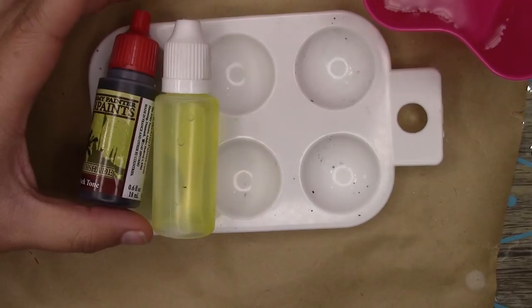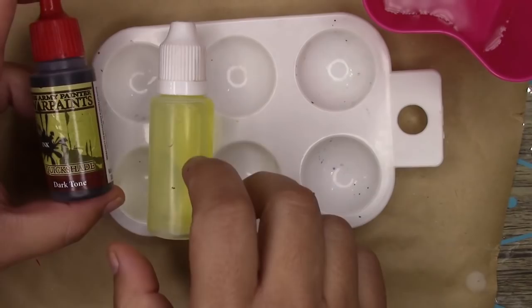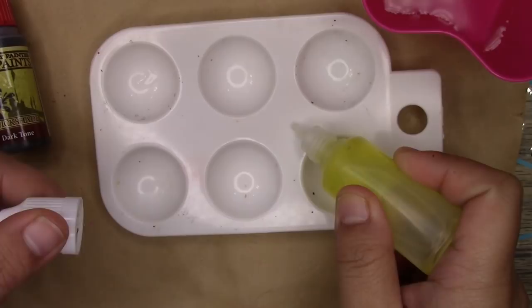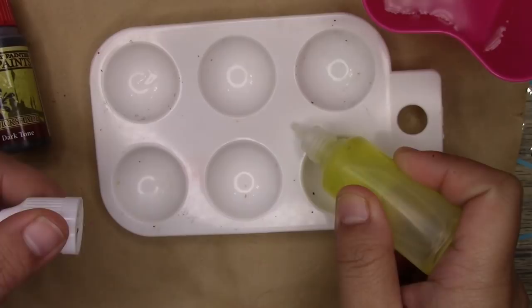For the pink and yellow Rangers, we're going to be using a similar product, but this time we're going to thin it out. This is Dark Tone from that same line of shades we used for red and blue. When applied straight, it almost looks black, but when you add water to it, it becomes subtle grey. We're going to thin it out really, really thin.